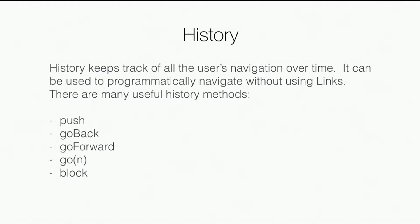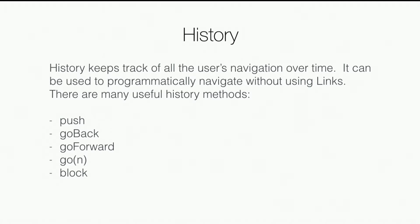Any questions about router so far? The main things are: wrap your whole app in a Router so everything is under the router's control; use Route components to tell it what paths to match and what components to render; and use Links to get around. The other part of our app is getting data from the APIs — we got data about the user from the GitHub API, and we tried to get data from the NASA API.